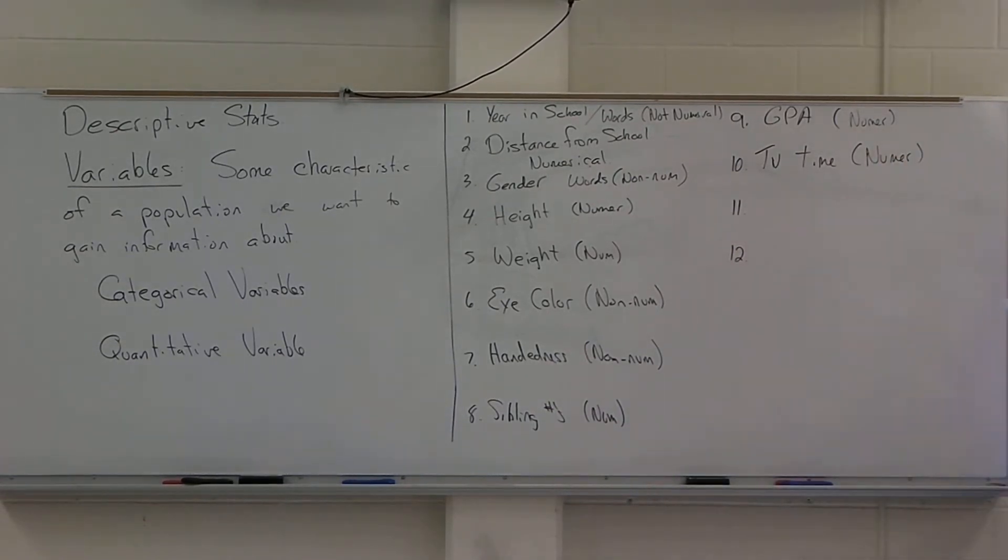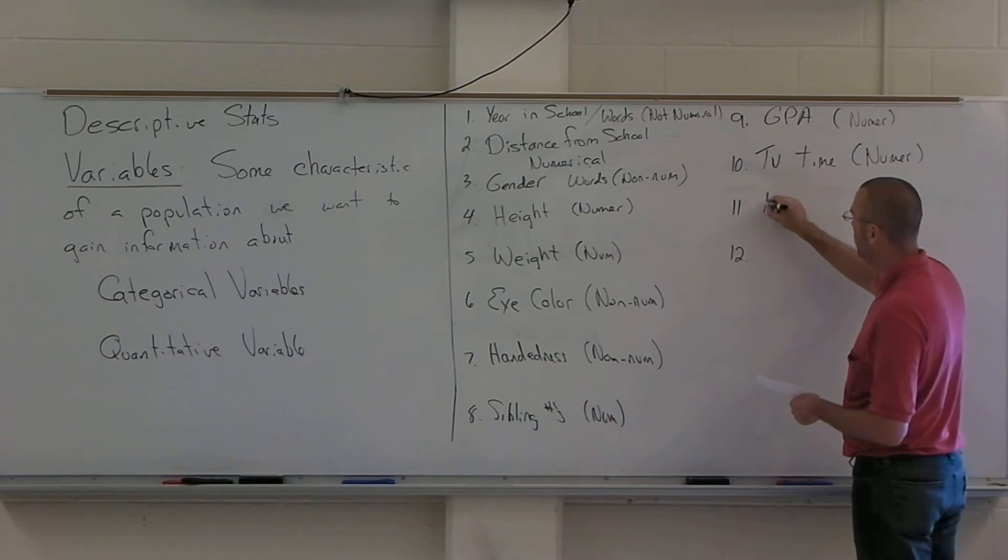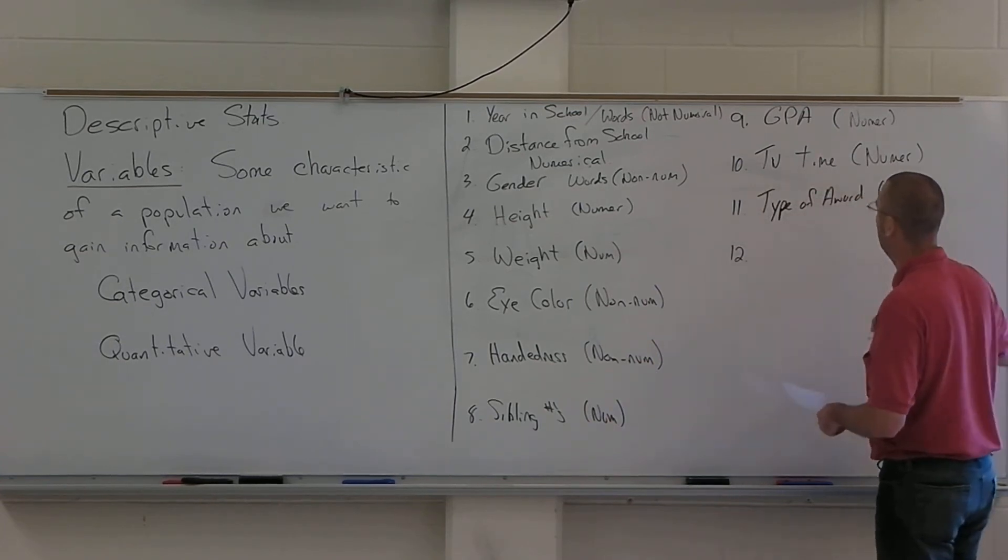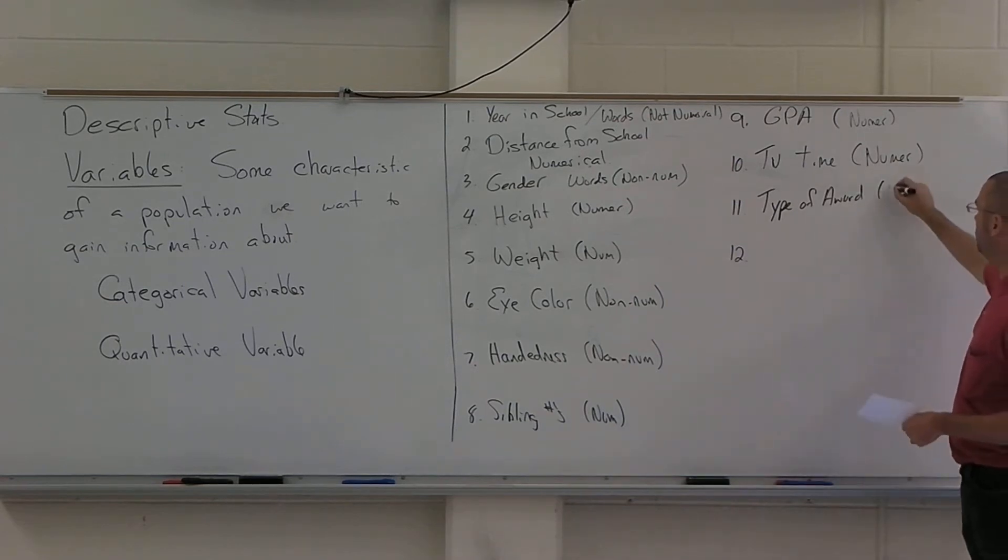Would you rather win an Olympic gold or an Academy Award or a Nobel Prize? Variable is type of award. And the response would be non-numerical.